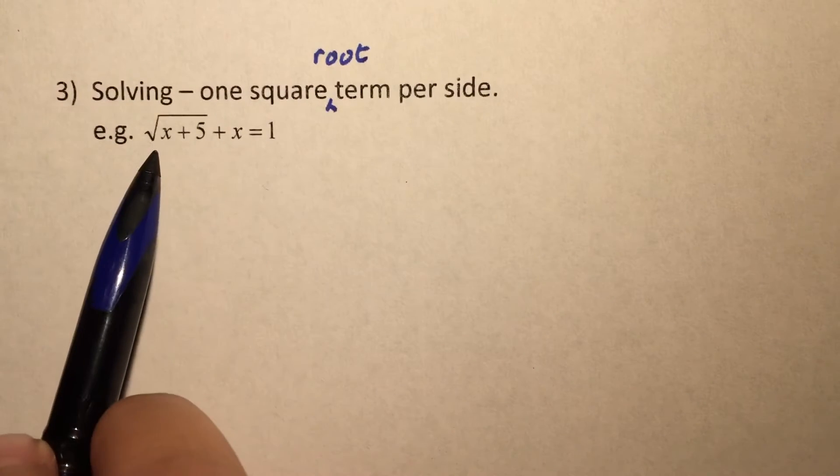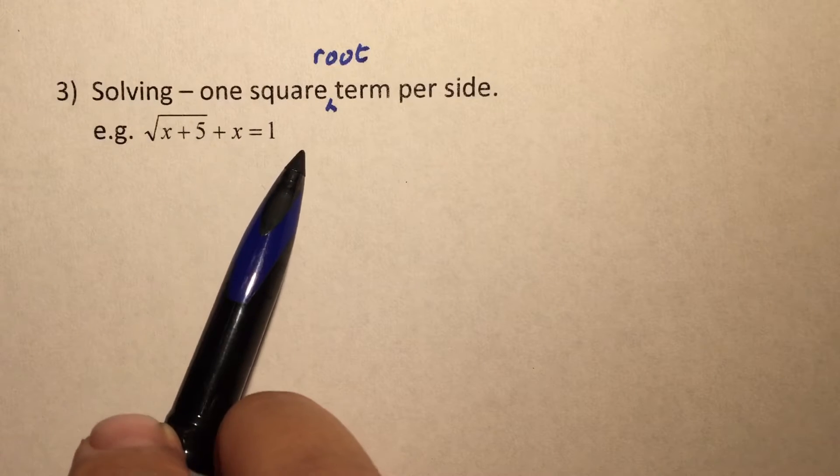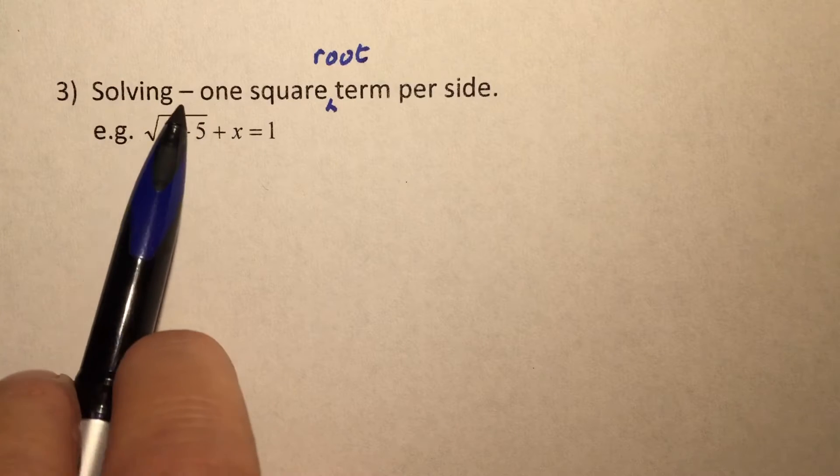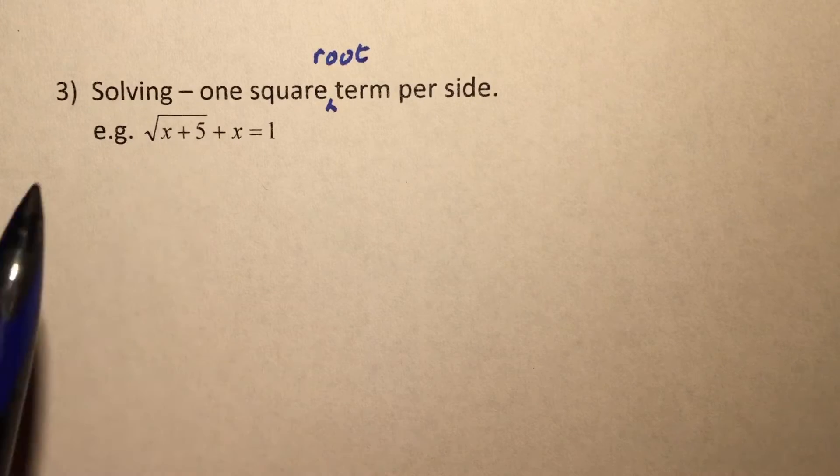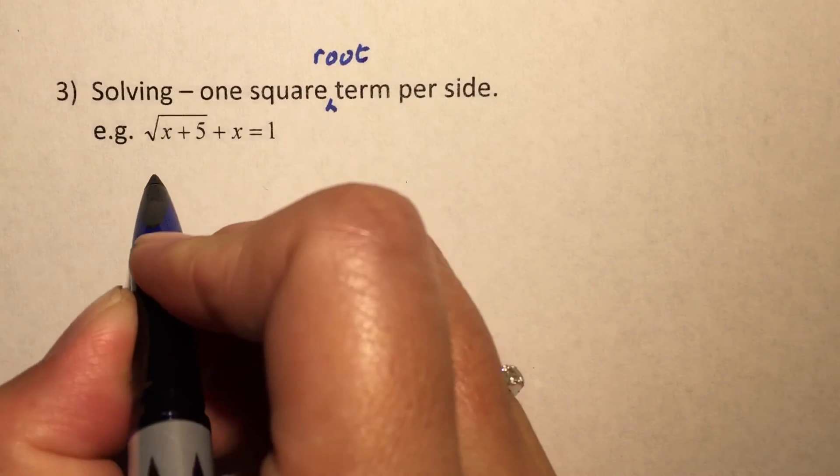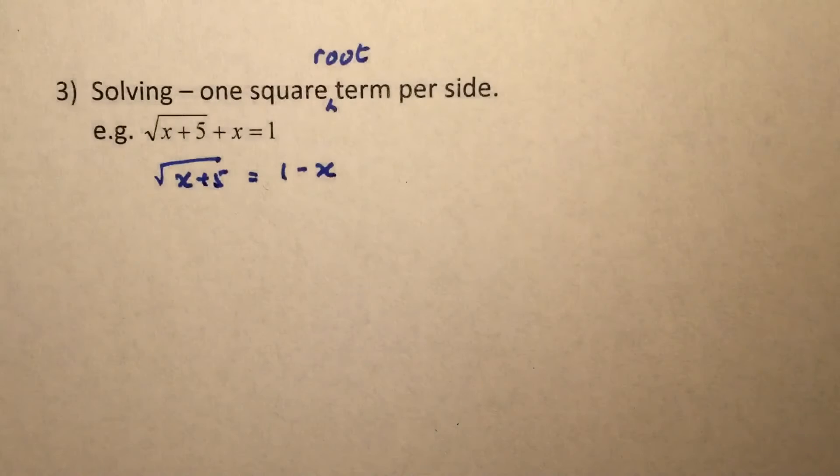As you can see here, we have square root x plus 5, then we have plus x equals to 1. What we need to do is keep the square root on the left-hand side by itself. So, which means that we do not want to have this x here. The first thing that we can do is bring the x over to the right-hand side.